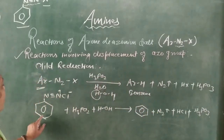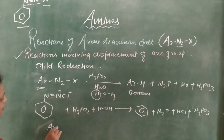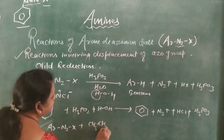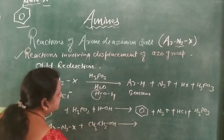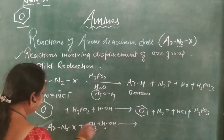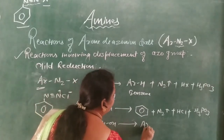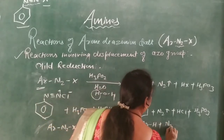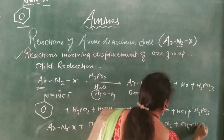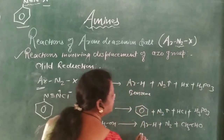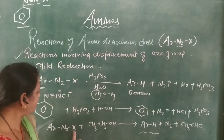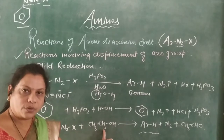Another mild reduction: ArN2X plus ethyl alcohol CH3CH2OH. Here H combines with Ar to form ArH — benzene — plus N2 plus CH3CHO (acetaldehyde). So benzene is obtained by mild reduction of aryl diazonium halide with ethyl alcohol.